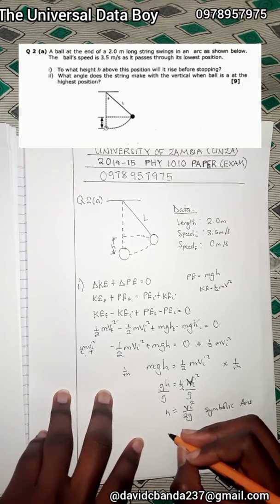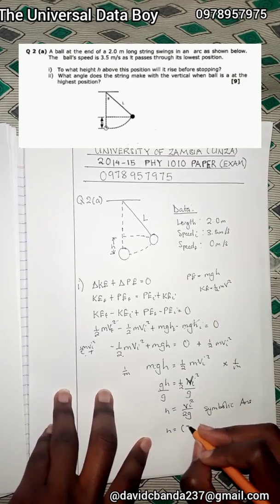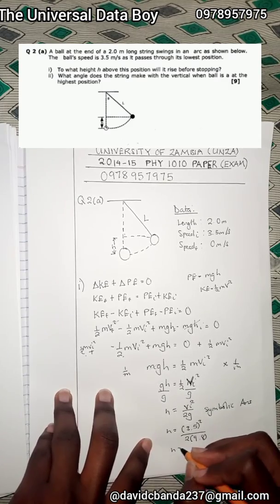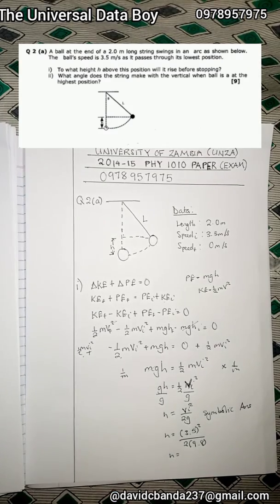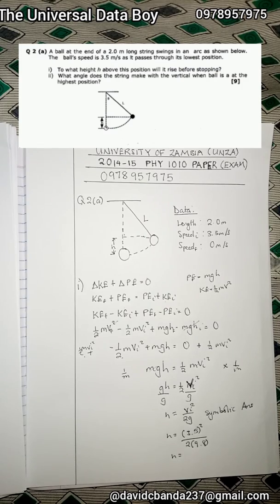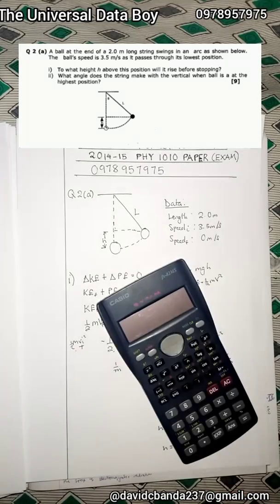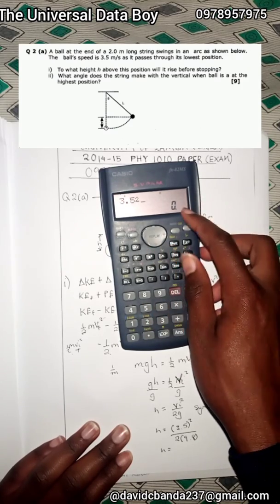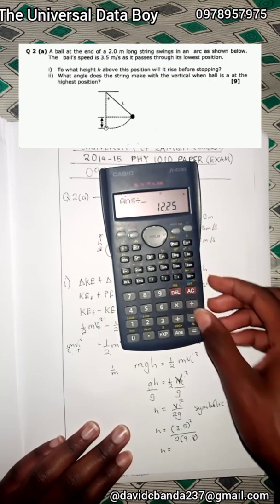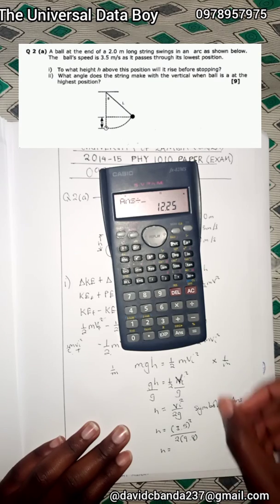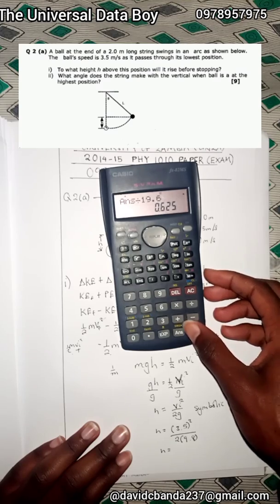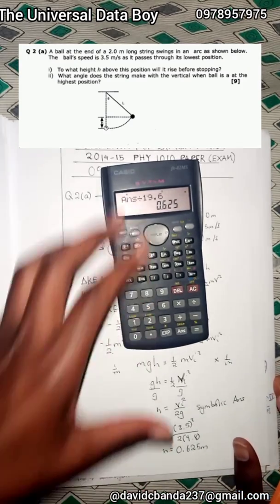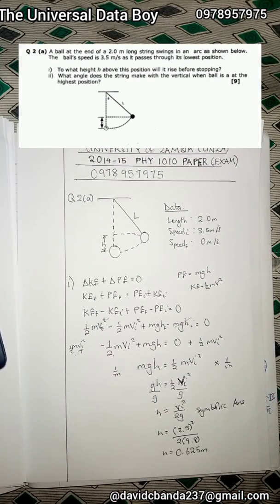That's our symbolic answer. Now plugging in values from the data we collected: h = (2.5)² divided by (2 × 9.8). That gives 6.25 divided by 19.6, so h equals 0.625 meters. That's the answer for roman numeral one — the ball rises to a height of 0.625 meters.